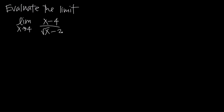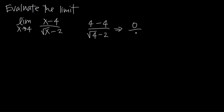You always want to try substitution first, which is where we just take the value that we're approaching and plug it in. So here, if we use substitution, in the numerator we get 4 minus 4 when we plug in 4 for x — so 4 minus 4 divided by the square root of 4 minus 2. Simplifying: 4 minus 4 is 0, the square root of 4 is 2, and 2 minus 2 is 0. So we end up with 0 over 0.